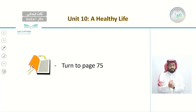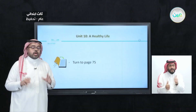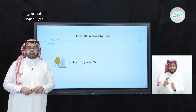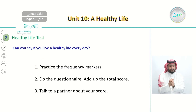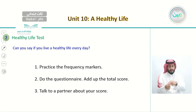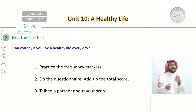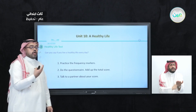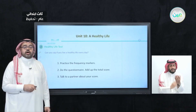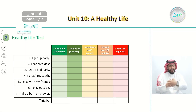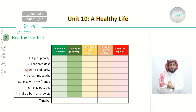After reading the good and bad things, let's test our healthy life on page 75. On page 75, we're going to do a healthy life test. You'll practice the frequency markers and do the questionnaire, add up the total score, and talk to a partner about your score. In the table you'll see frequency options for different activities.